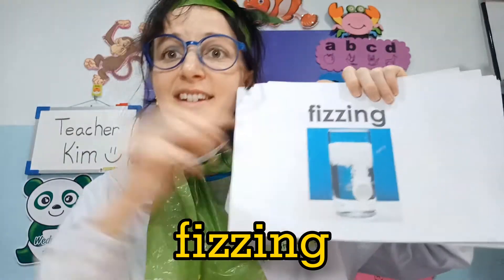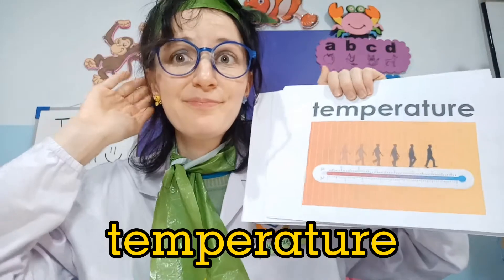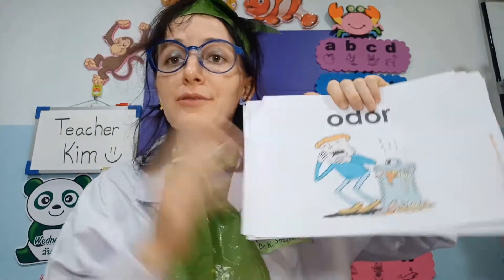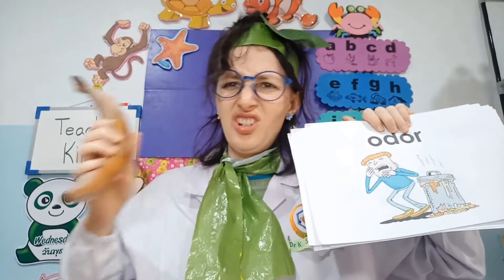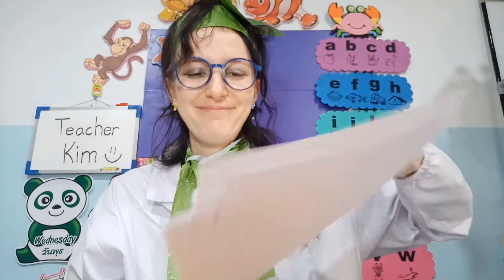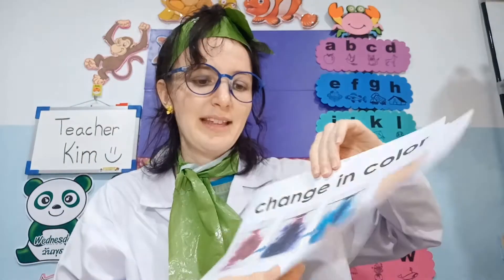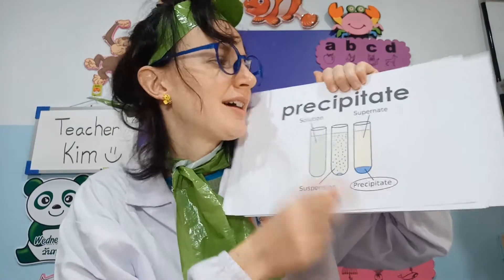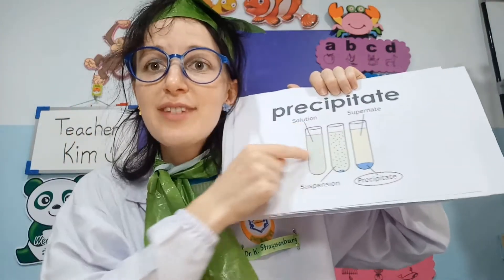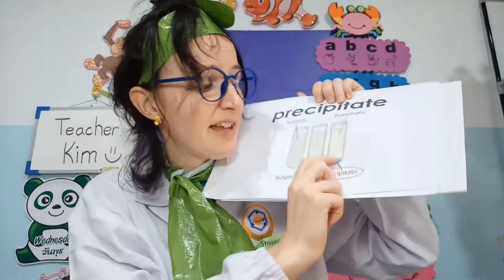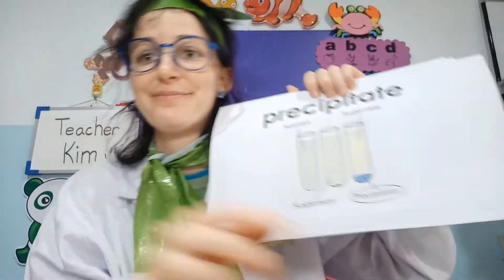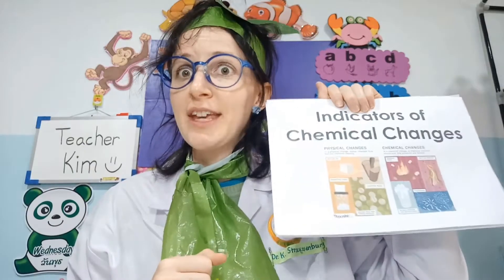For example, fizzing. Or a change in temperature — it gets very hot or very cold. Another indicator of a chemical change is odor, a very strong smell. Or a change in color. And our last one, precipitate — we mix together a solution and there is a chemical reaction and there is a solid that is left over. This is the precipitate. So all of these are indicators of chemical changes.